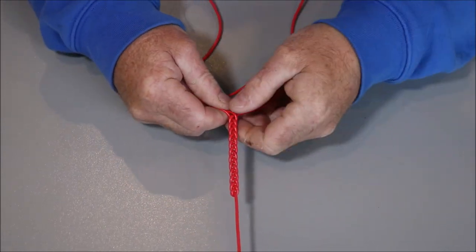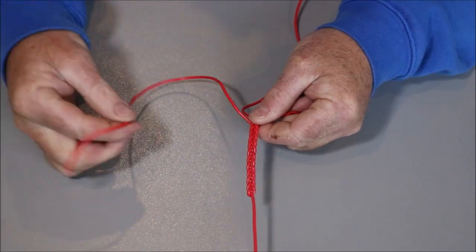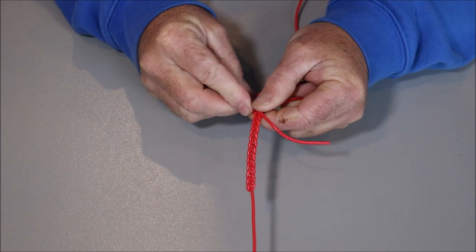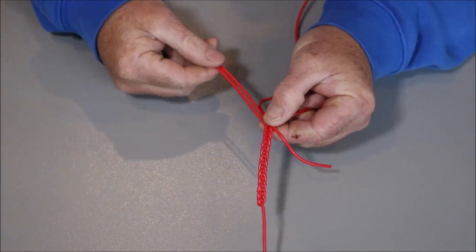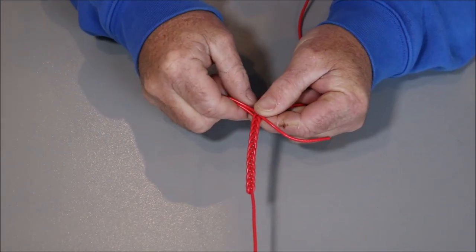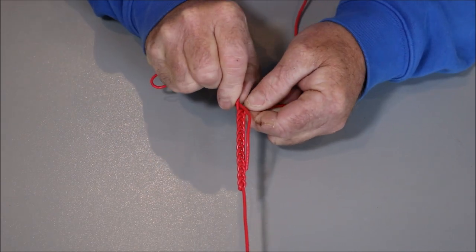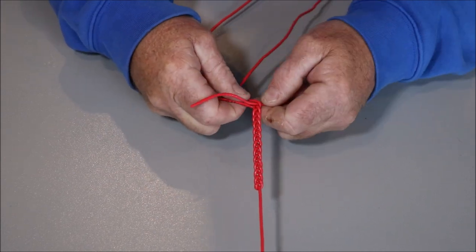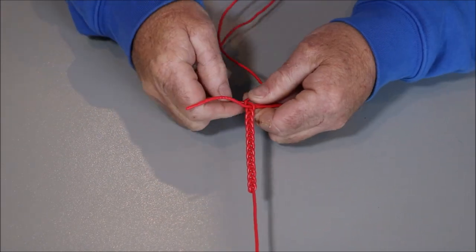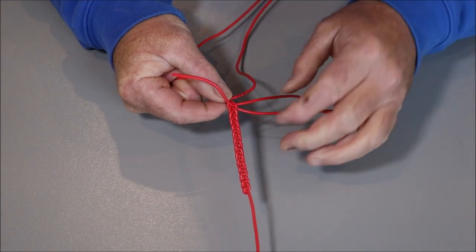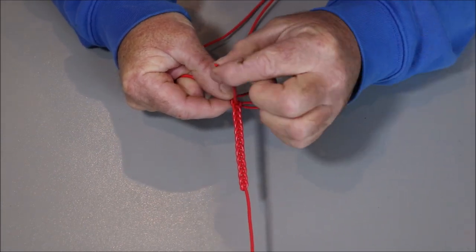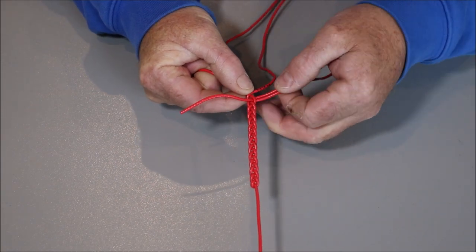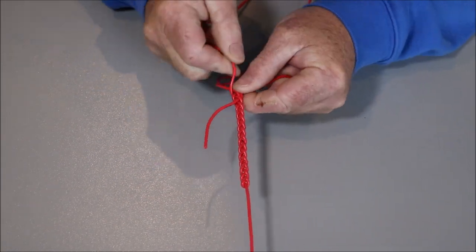Now, once you get to the desired length, this tag end is very important. What we do is we bring it back on itself, and double the line. Like that. And then continue on plaiting. So, back to the middle. And then continue on. Now, what I'm doing is I'm plaiting in this double. It's been doubled up. And I've got the tag end hanging out here, as you can see. And continue on like so.